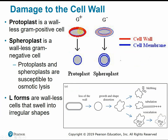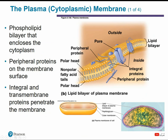Gram-positive has a thicker cell wall. If we encounter an antibiotic that breaks down the cell wall but we still have the inner cell membrane, it's now referred to as a protoplast. A spheroplast is a gram-negative cell that has lost its cell wall, so now we just have a double layer of cell membrane. Because the cells have lost their protective, more rigid outer layer, they're more susceptible to osmotic lysis — water rushing into or leaving the cell, changing its shape, and potentially killing it. L-forms are wall-less cells that swell or shrink into irregular shapes, eventually bursting.